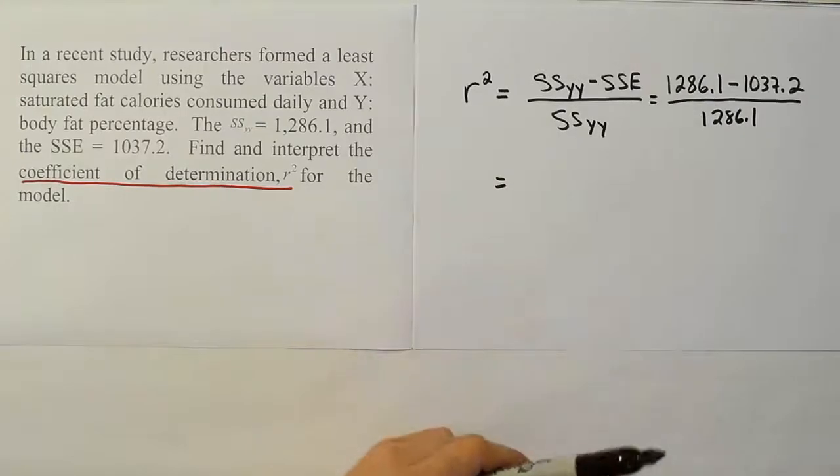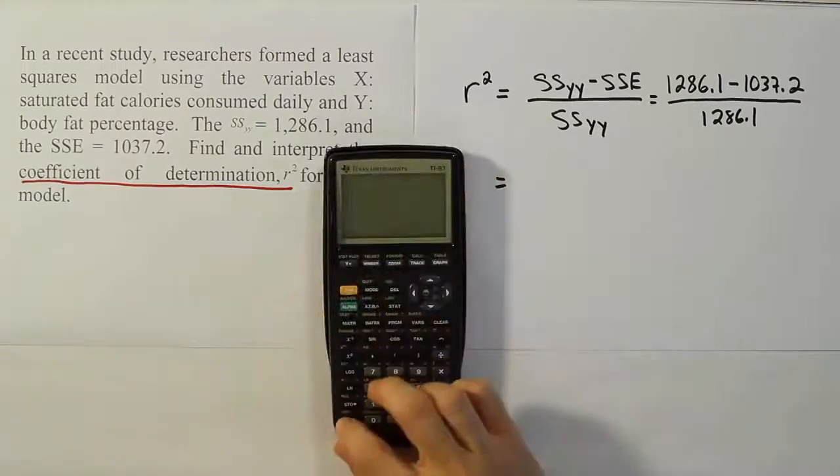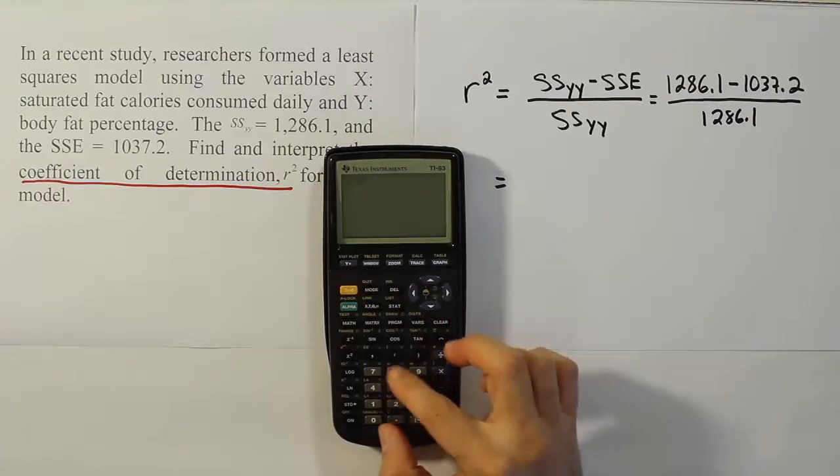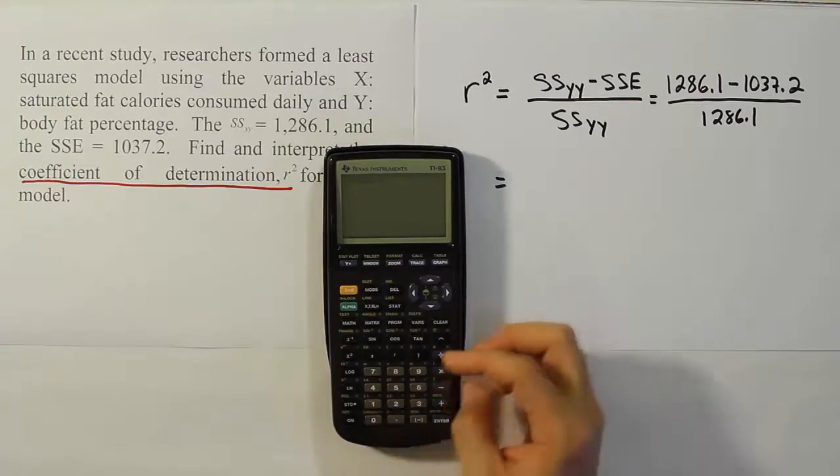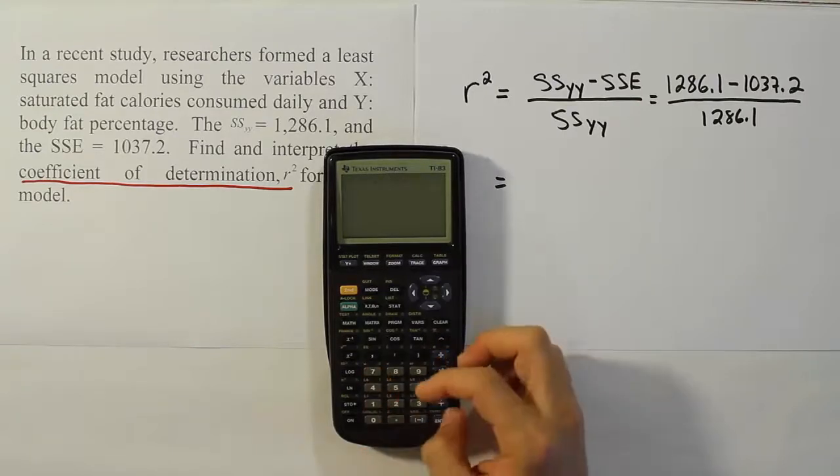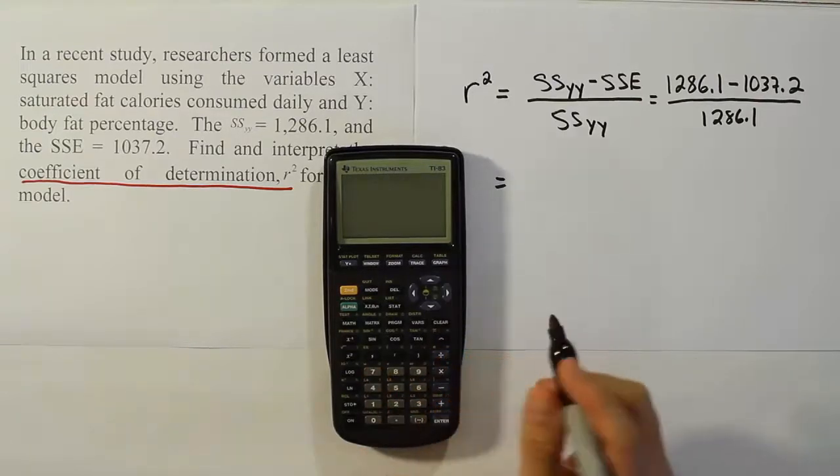Okay, now let's work that out and see what we come up with. So, we have 1,286.1 minus 1,037.2, subtract those, you get 248.9.